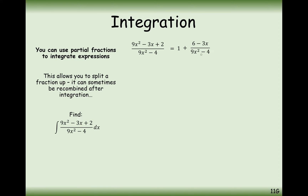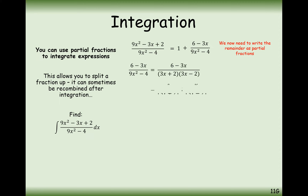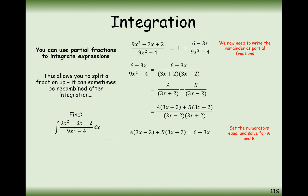So now we're going to split this component into two separate fractions. Remember, we can factorise the bottom here into (3x plus 2)(3x minus 2). We'll think about what this would look like added together and consider the numerators. We'll have A(3x minus 2) plus B(3x plus 2) equals 6 minus 3x.